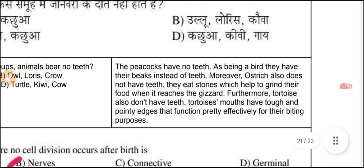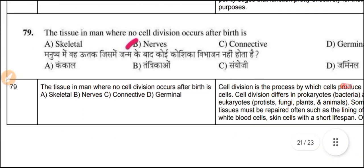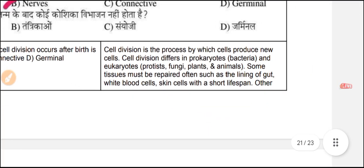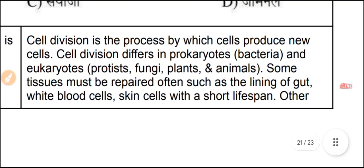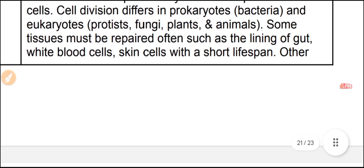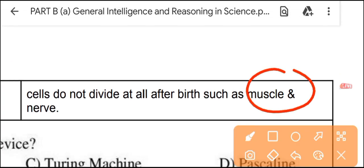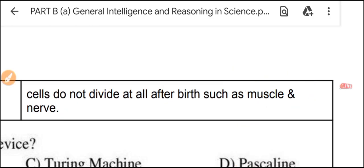Question 79: The tissue in which no cell division occurs after birth is nervous tissue. Cell division is a process by which cells produce new cells. While some tissues repair often — such as the lining of the gut, blood cells, and skin — other cells do not divide after birth, such as muscle and nerve cells.